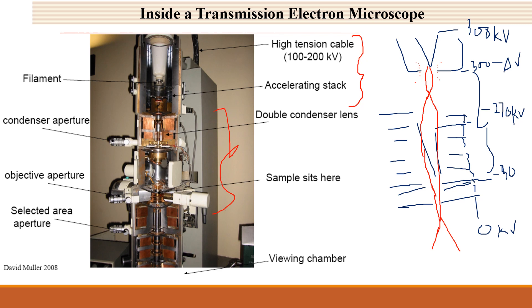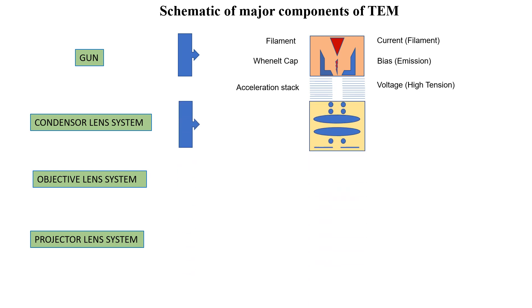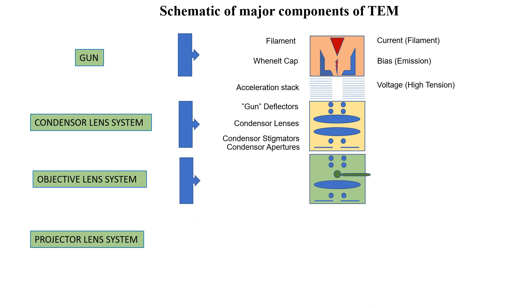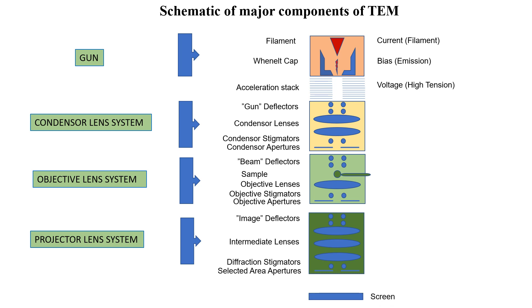The Wehnelt cylinder is an electrostatic lens, while the condenser and objective lenses are electromagnetic lenses. The major components of the TEM are: the gun system (filament, Wehnelt cap, acceleration stack); the condenser lens system (gun deflectors, condenser lenses, condenser stigmators, condenser apertures); the objective lens system (beam deflectors, sample, objective lenses, objective stigmators, objective apertures); and the projector lens system (image deflectors, intermediate lenses, diffraction stigmators, selected area apertures, and finally the screen).